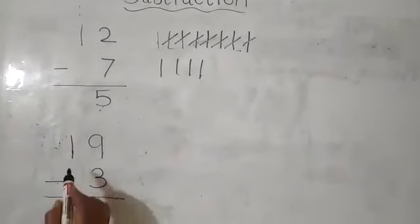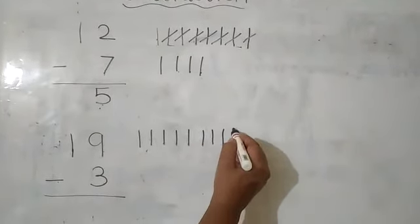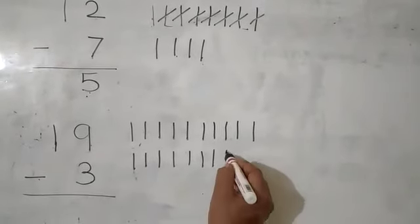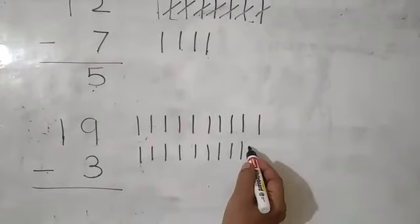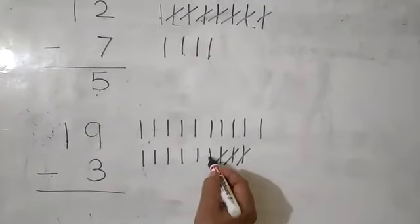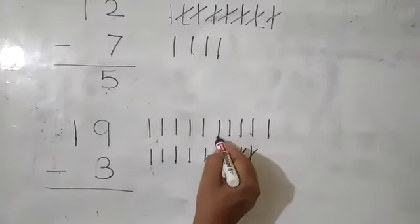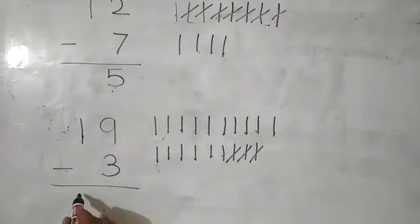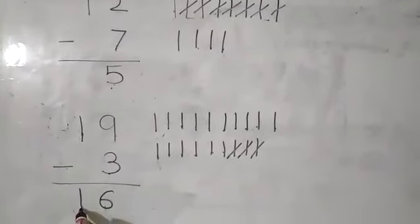Same here: 19 minus 3. We will draw 19 sticks: 1, 2, 3, 4, 5, 6, 7, 8, 9, 10, 11, 12, 13, 14, 15, 16, 17, 18, 19. How many do we cross out? We cross out 3: 1, 2, 3. Now count how many sticks are remaining: 1, 2, 3, 4, 5, 6, 7, 8, 9, 10, 11, 12, 13, 14, 15, 16. So 16 is our answer — the difference between 19 and 3 is equal to 16.